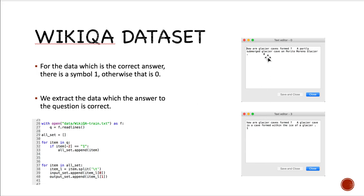this is the difference between the wrong answer and the right answer, and there is a number indicating whether this is the right or wrong answer. And we choose the data which has the correct answer.